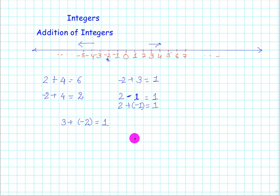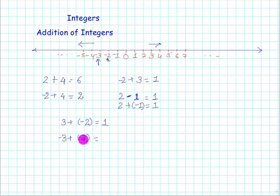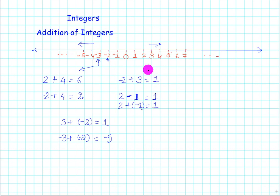Now let's take a case where we have a negative number, minus 3, and we add another negative number, minus 2. I am at minus 3 and since the number is negative, I move in the left-hand backward direction by 2 steps, reaching minus 5. So minus 3 plus minus 2 equals minus 5. When adding a negative number to any number, move left. When adding a positive number to any number, move right — the forward direction.